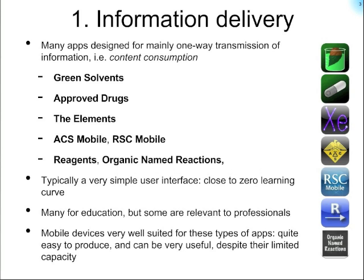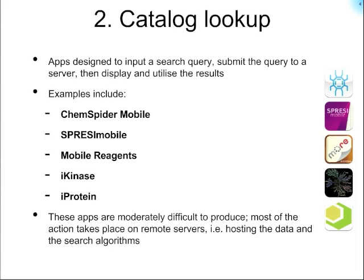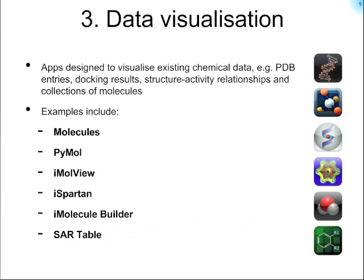There are a number of apps designed to provide reference information to the user based on chemical content. These content consumption apps are relatively straightforward to produce since the user interface tends to be very simple. Ramping up the complexity level, we have apps designed to look up chemical content in databases, with more complex user interfaces that can capture structures for query searches. There are also apps designed primarily for visualizing existing data — many based on 3D, so you can actually render entire proteins on just an iPhone, which is pretty cool.